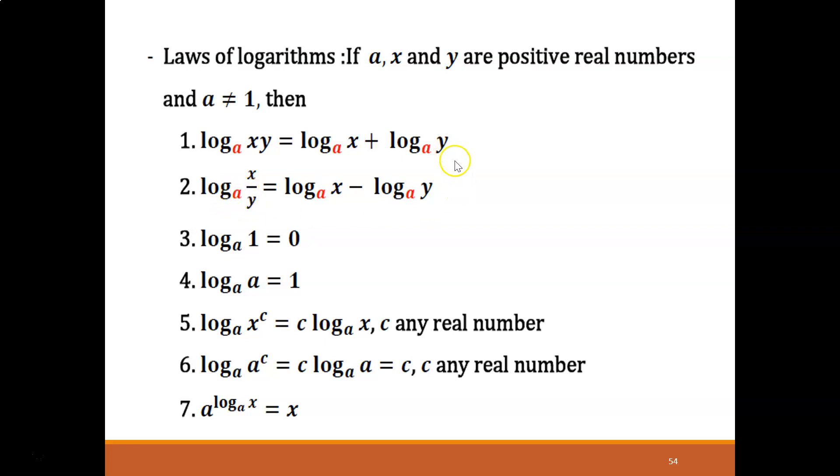Then you can write it down in this form. And then we have log base a of 1 equals 0. If earlier in indices, anything to the power of 0 becomes 1, it will be reversed. Now anything, log base a of 1 will give 0. And when you have log base a of a, same base, it also equals 1.